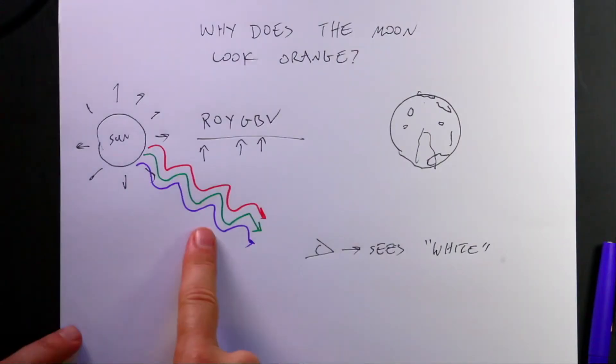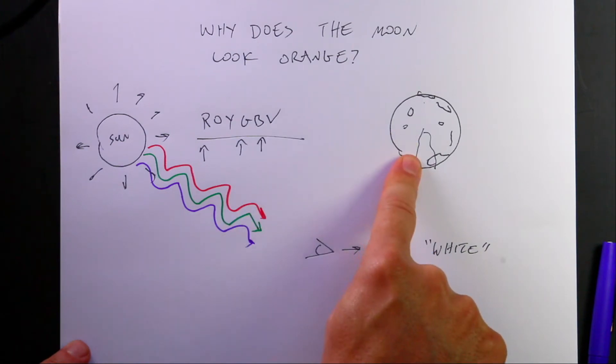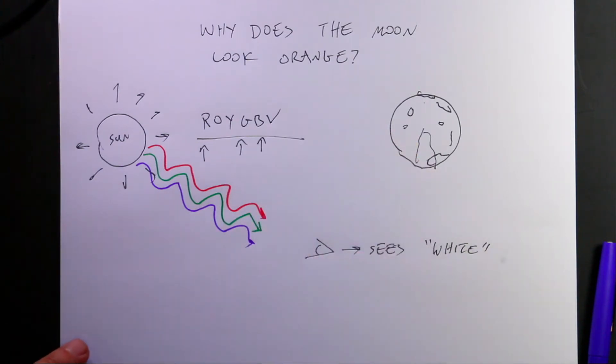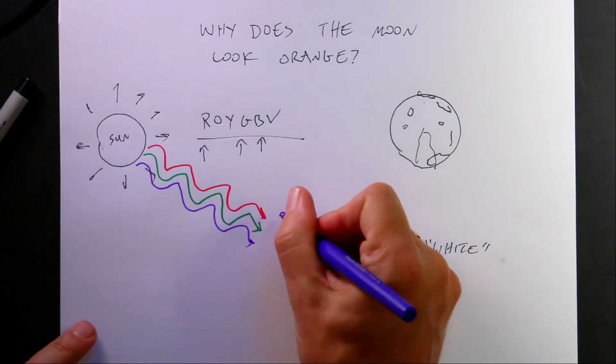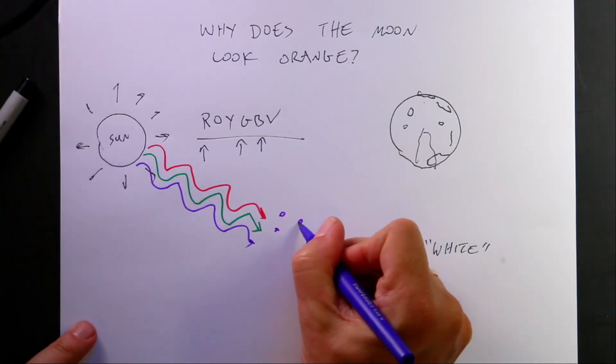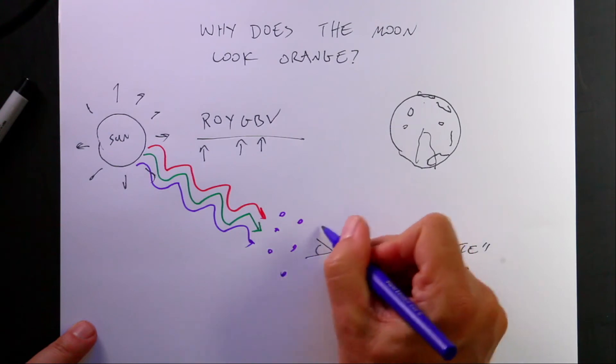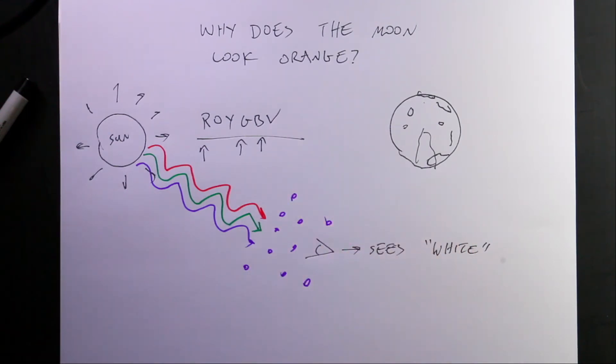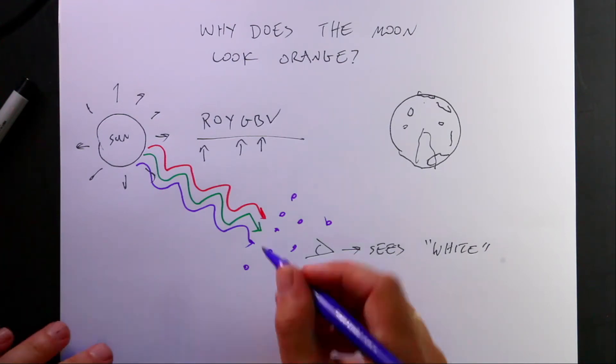So yes, combining all colors of light produces white. No color at all produces black. What does this have to do with the moon? There's a really important thing, and that's the air. It turns out that air molecules scatter blue light.